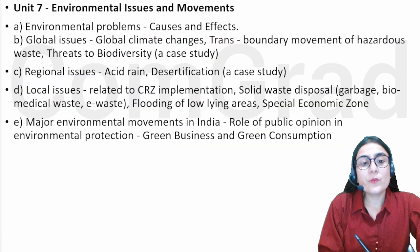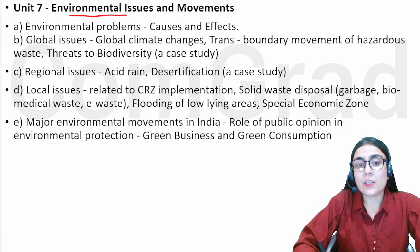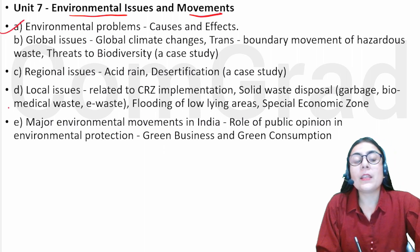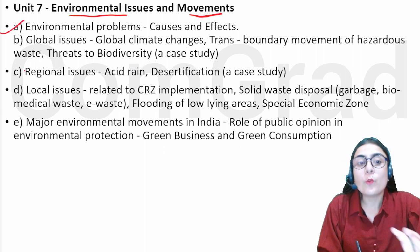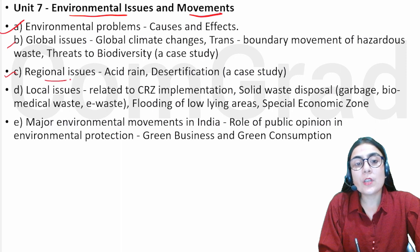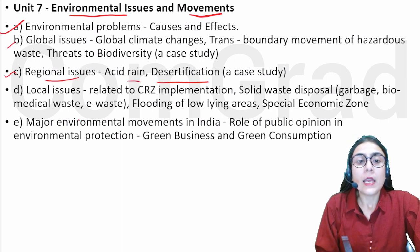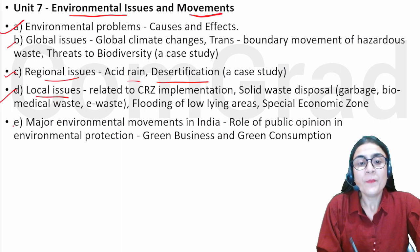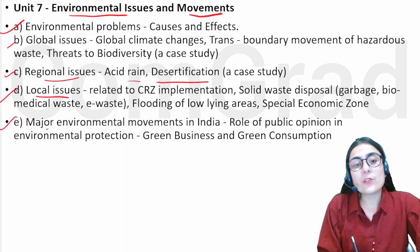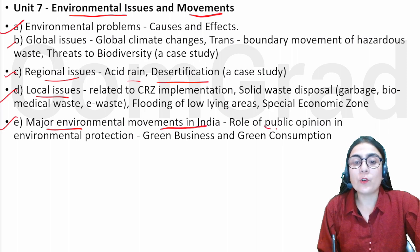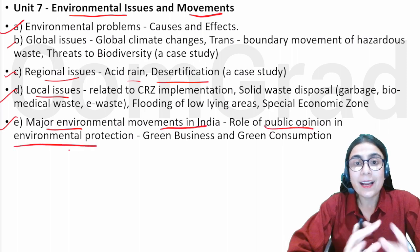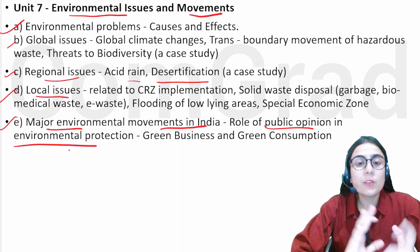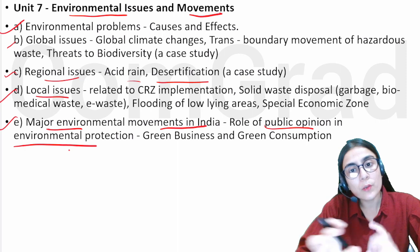The next is the seventh unit, which is related to environmental issues and movements. We will study environmental problems — causes and effects, global issues, regional issues such as acid rain and desertification, and local issues. Next is major environmental movements in India and the role of public opinion in environmental protection. So, the seventh unit covers environmental issues and movements.